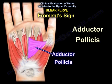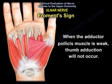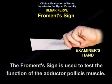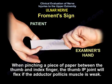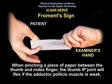Froment's sign relies on the adductor pollicis muscle. When the adductor pollicis is weak, thumb adduction will not occur. Froment's sign is used to test the function of the adductor pollicis: when pinching a piece of paper between the thumb and index finger, the thumb IP joint will flex if the adductor pollicis muscle is weak, as seen in ulnar nerve palsy on the left side of the screen.